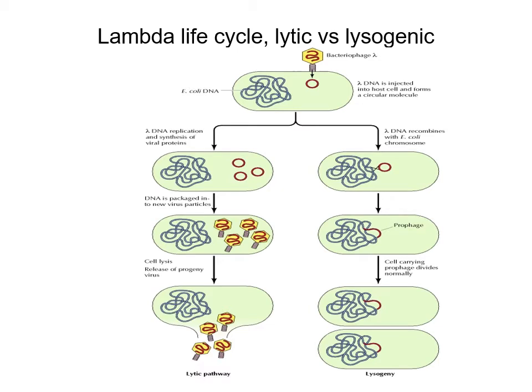Lytic versus lysogenic life cycle: lambda will infect an E. coli cell and inject its DNA into the cell. At that point it has the option of either undergoing normal lytic growth, in which new phage particles are formed which then lyse the cell, leading to spread of the infection to other cells nearby. As an alternative, lambda has the option of integrating itself into the E. coli chromosome, where it exists as a prophage and can be replicated passively along with the chromosome indefinitely — those cells are called lysogens.